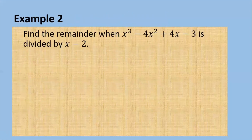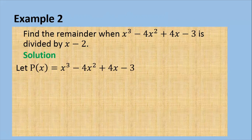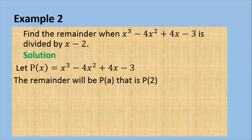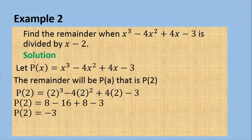Let's take a look at another example. Find the remainder when x cubed minus 4x squared plus 4x minus 3 is divided by x minus 2. First step, let p of x equal to x cubed minus 4x squared plus 4x minus 3. We know it is divided by x minus 2, therefore x minus 2 equals 0, so x equals 2. p of 2 gives 2 cubed minus 4 times 2 squared plus 4 times 2 minus 3, which is 8 minus 16 plus 8 minus 3, which is negative 3. Therefore the remainder is negative 3.